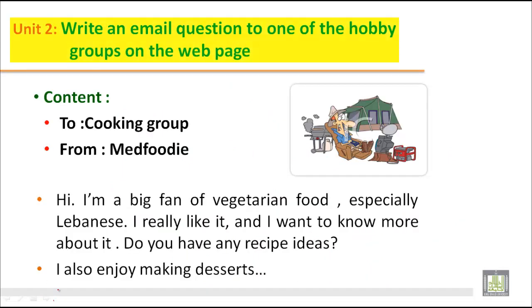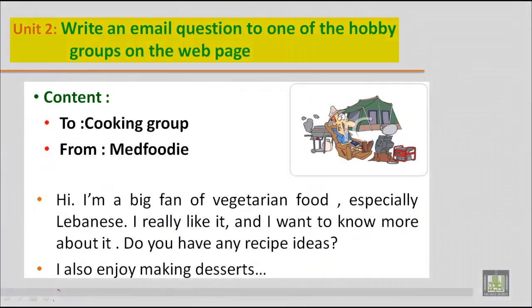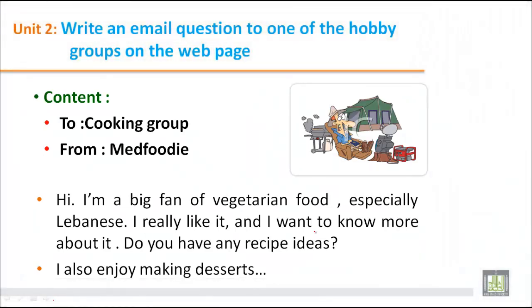Now let's sum up what we have discussed today. You will write to two cooking groups from your email address, for example 'Medfoodie'. You can say: 'Hi. I am a big fan of vegetarian food, especially Lebanese. I really like it and I want to know more about it. Do you have any recipe ideas? I also enjoy making desserts.' Hope you have got an idea how to write an email question to one of the hobby groups. This is all for today. Have a nice day. See you in the next class.